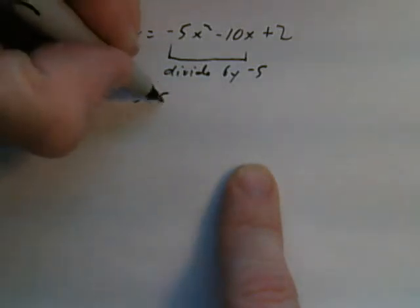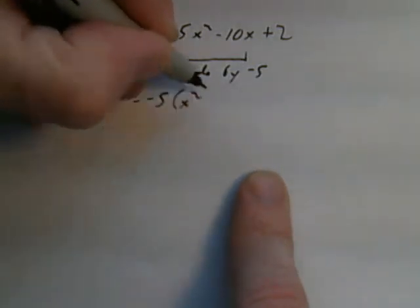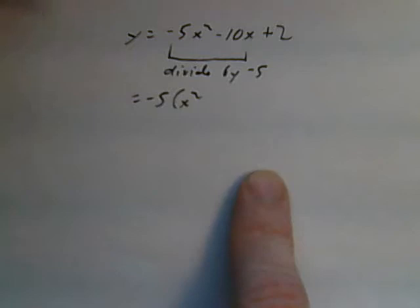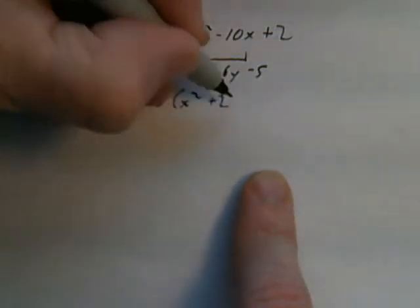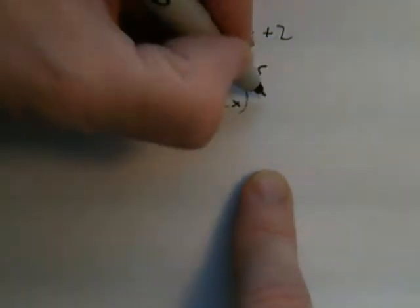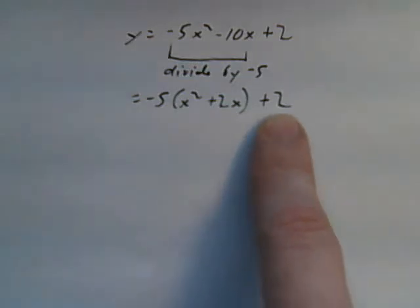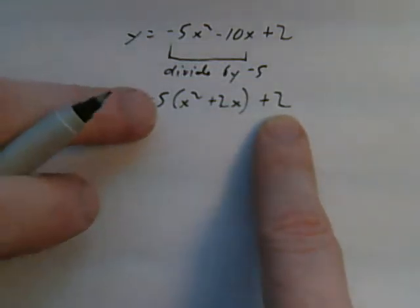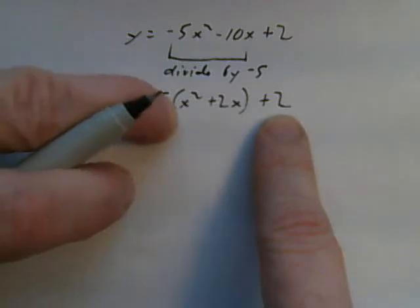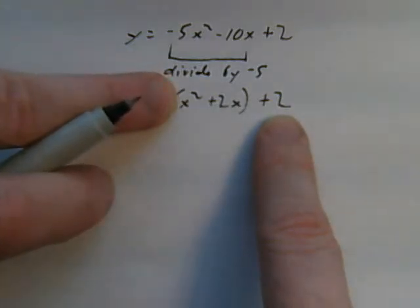That will give me negative 5x squared. Negative 10 divided by negative 5 is plus 2x and then plus 2. Do not divide the third term by negative 5. I now have an a value in front of the x squared that's 1. So now I can go ahead and do this.